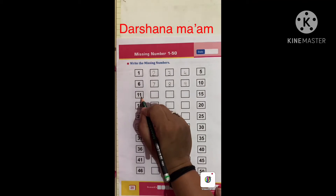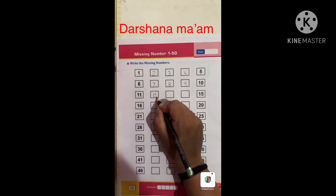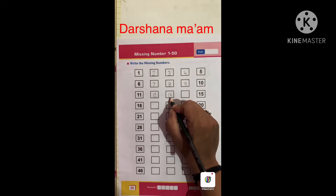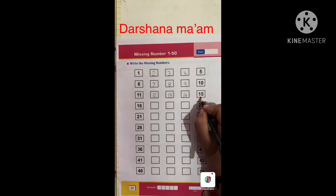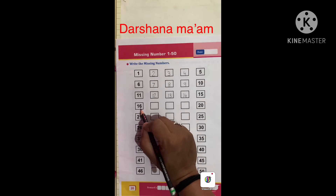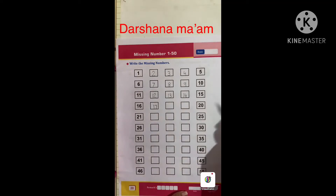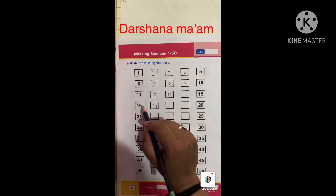Ten after eleven — one one. Eleven after twelve — one two. Twelve after thirteen — one three. Thirteen after fourteen — one four. Fourteen after fifteen — one five. Fifteen after sixteen — one six. Sixteen after seventeen — one seven.